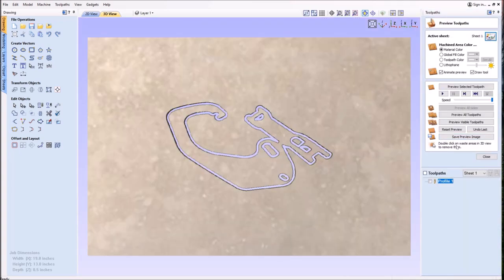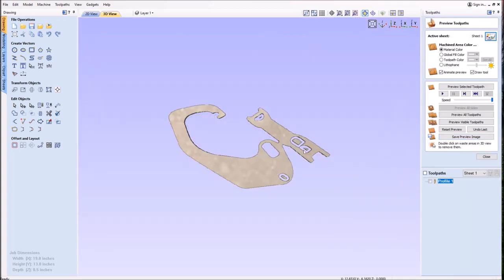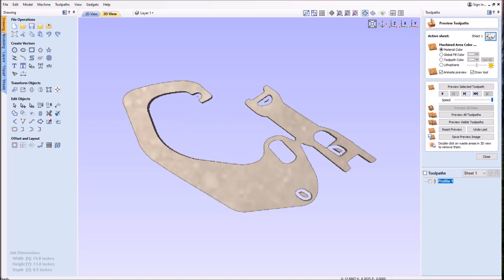In addition to checking the vector quality, I like to run my file through the simulator of Aspire just to see how that part's going to look.